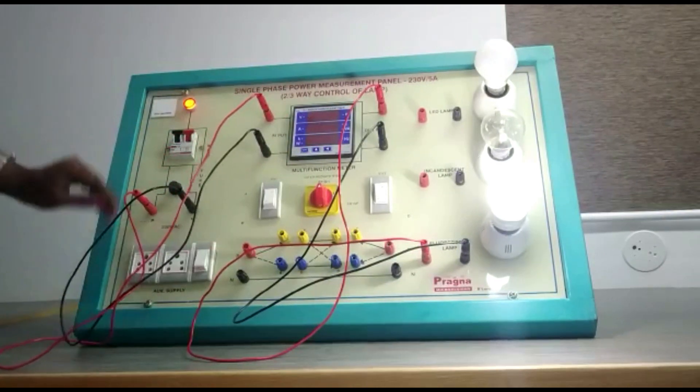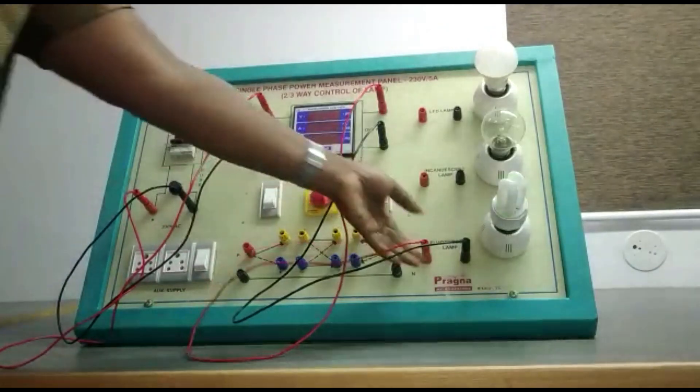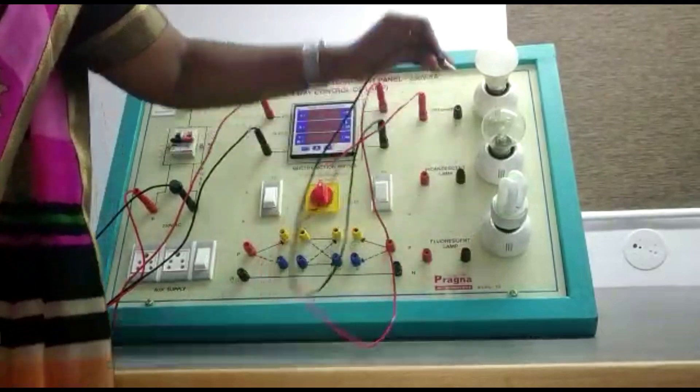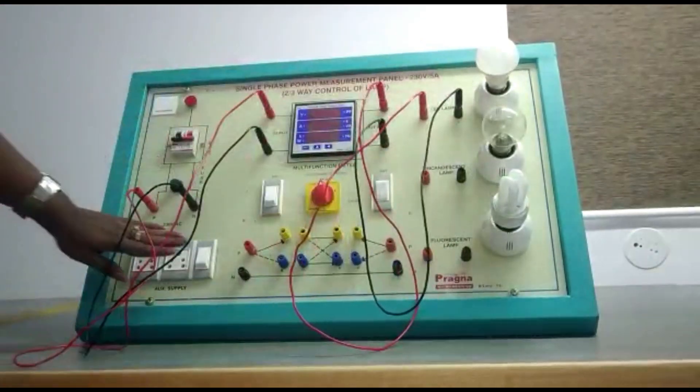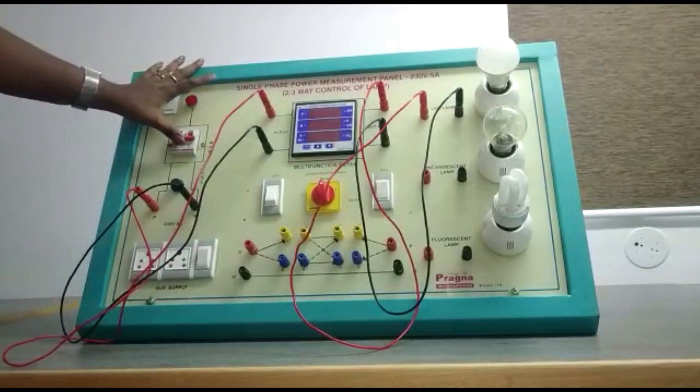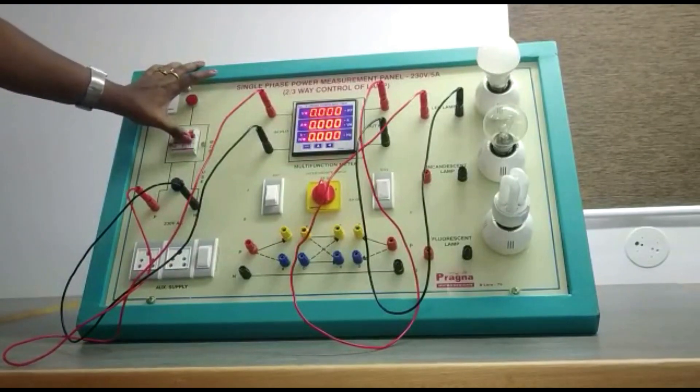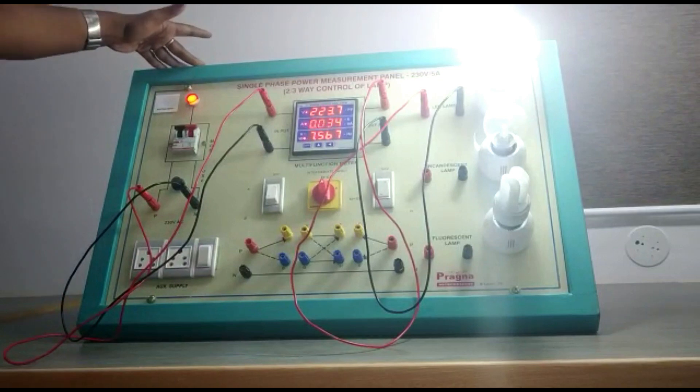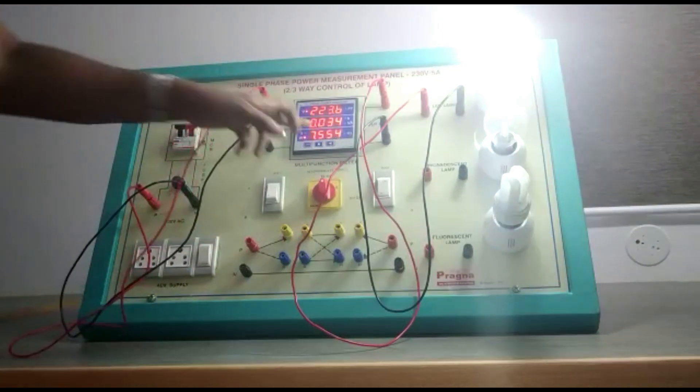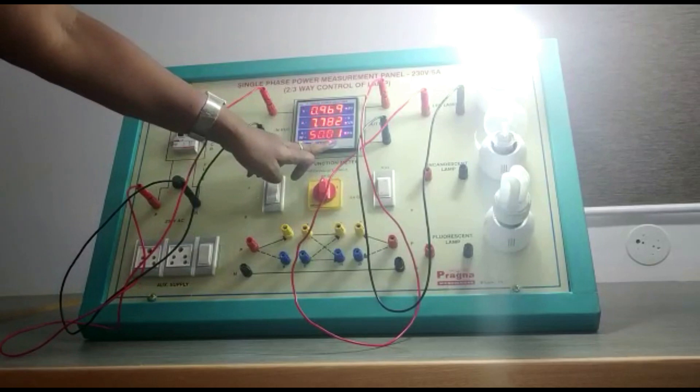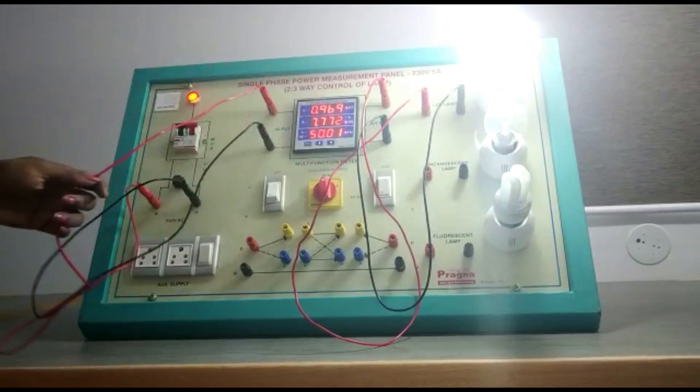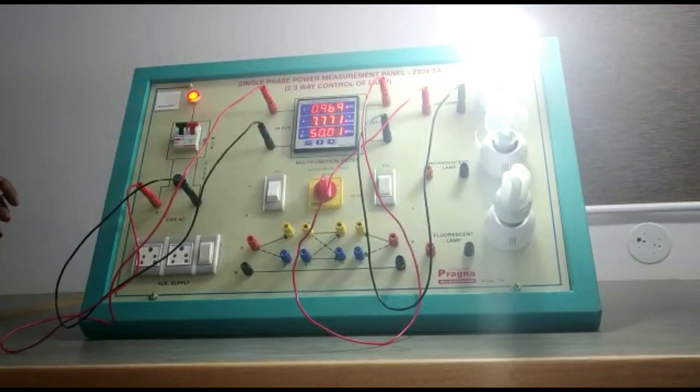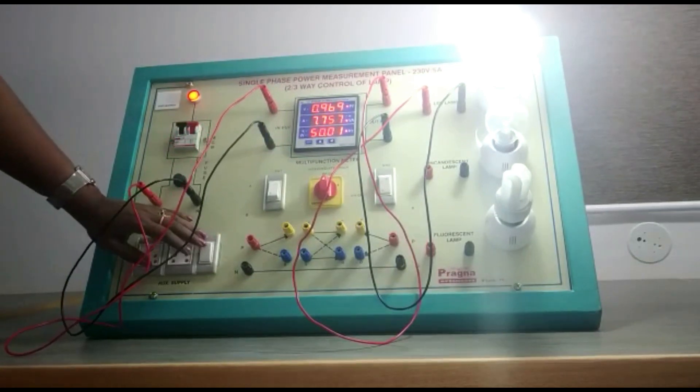Finally, for the last one, switch off the meter and the MCB again. Note down these values and compare them, and write down the results. Thank you.